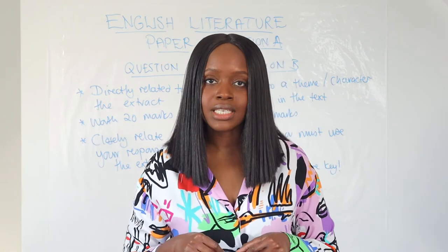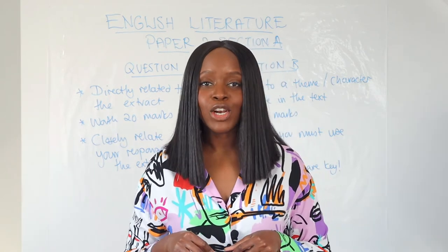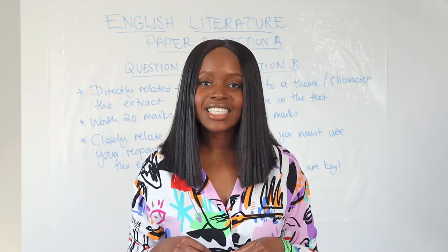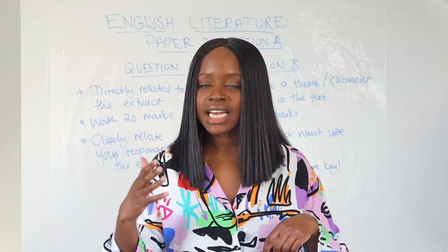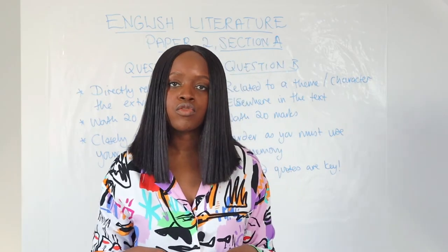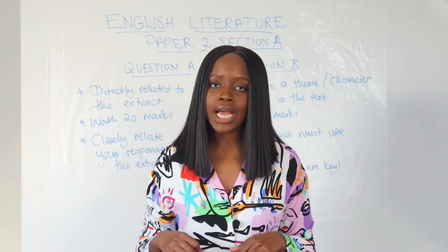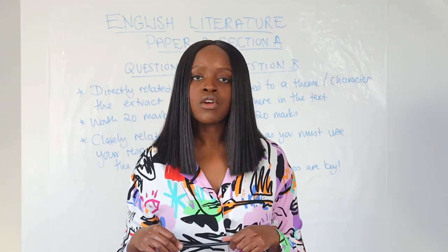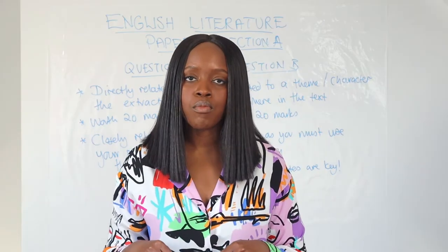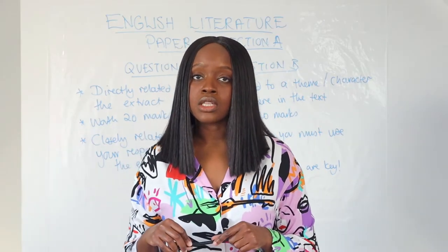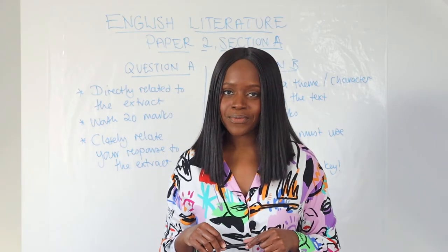So that's the overview of English literature paper 2 section A. Now let's have a look at some of these questions and exactly how they are laid out, before we look at how to write really good model answers to this paper.